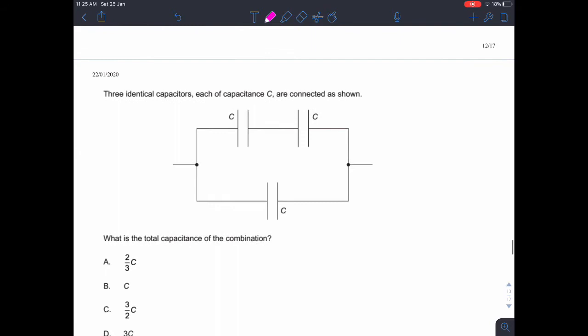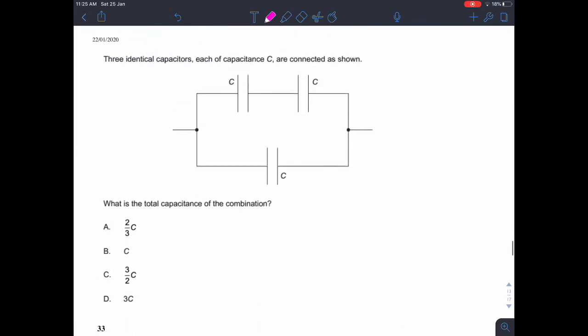Question 32. Three identical capacitors, each of the capacitance C are connected as shown. The total capacitance. This is very similar to what you would usually see a resistance question like this. But remember the equations for capacitance are the opposite way around to the equations for resistance.